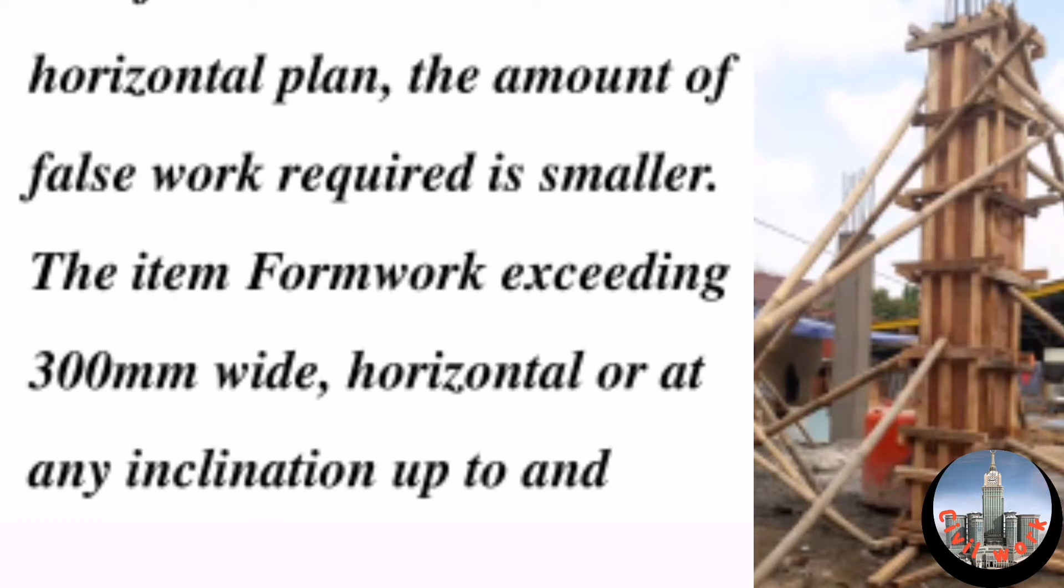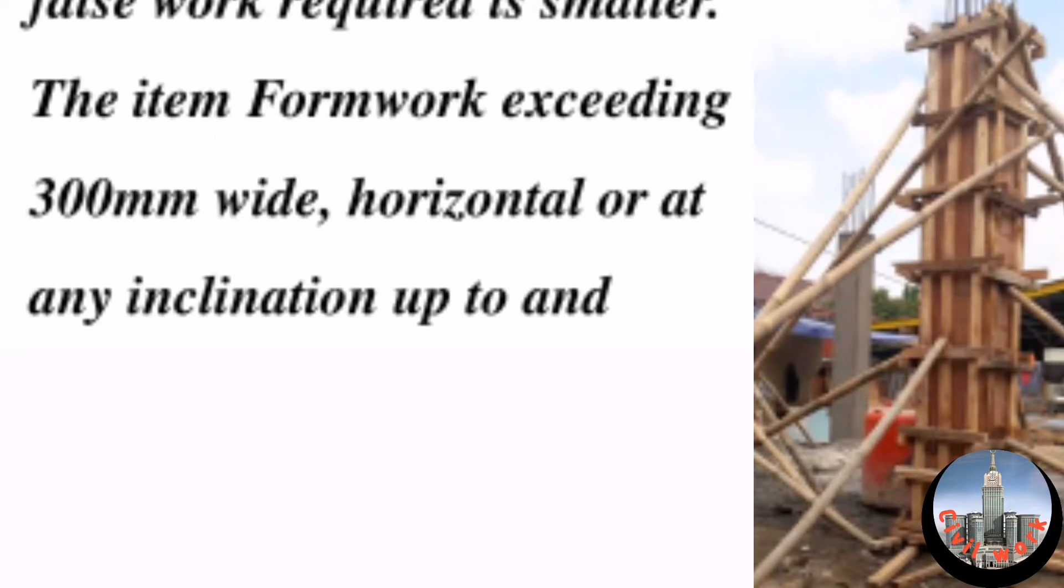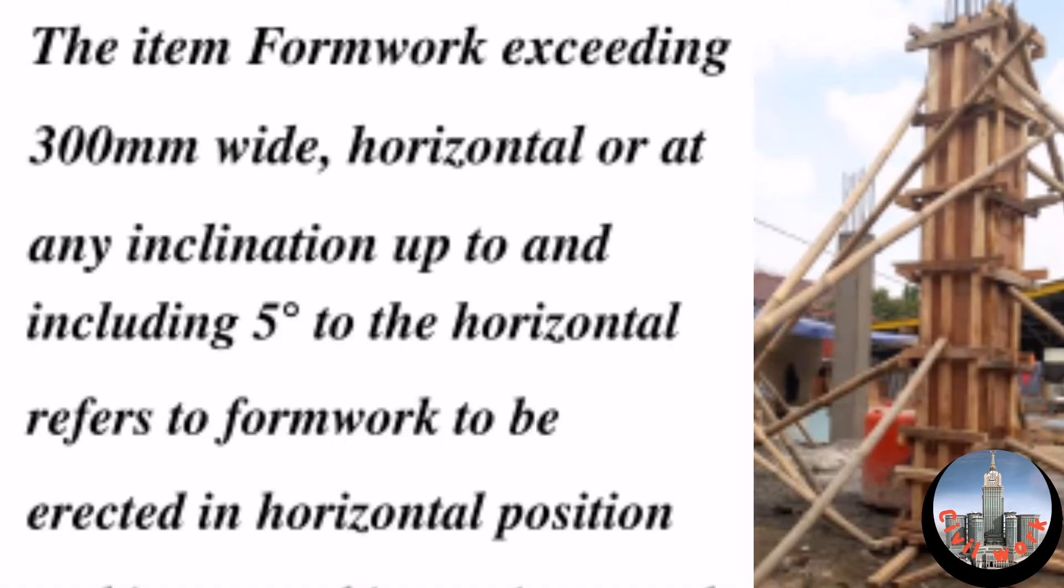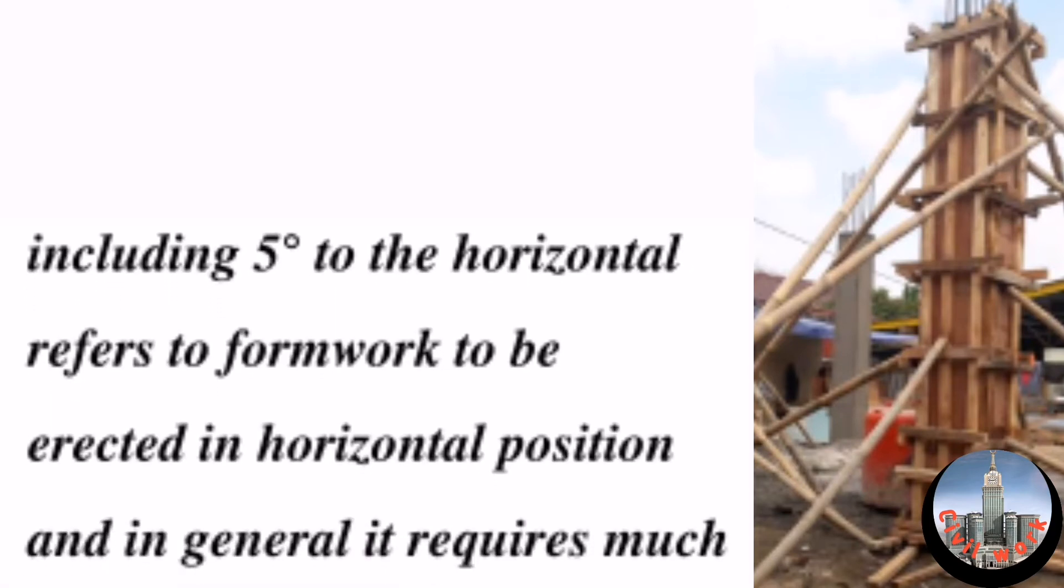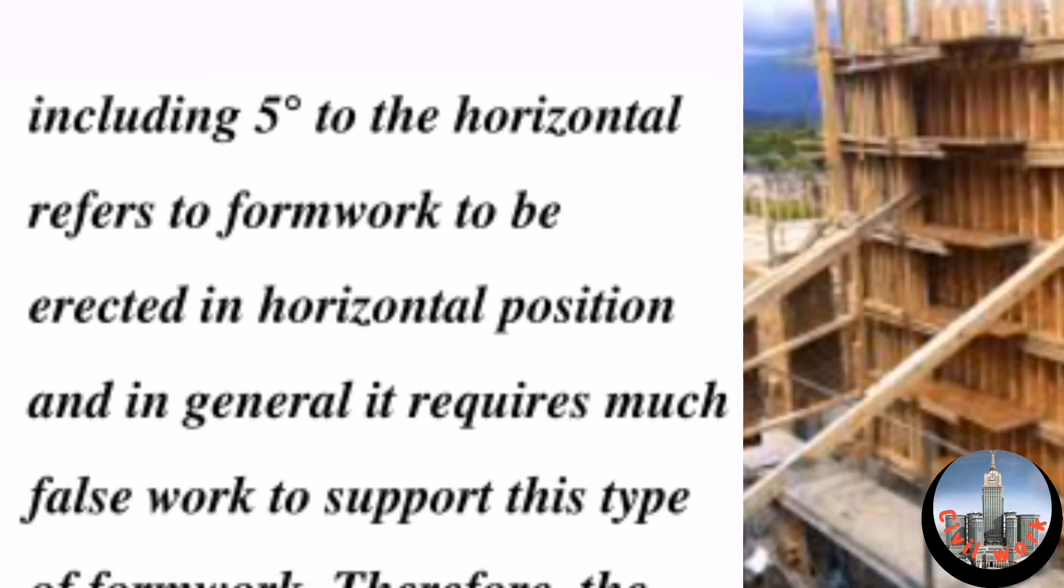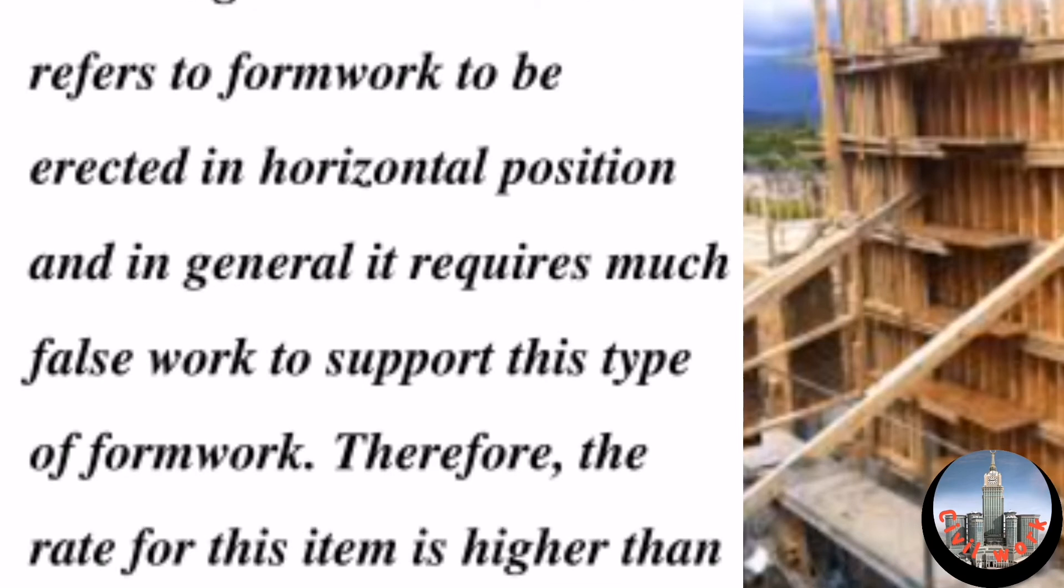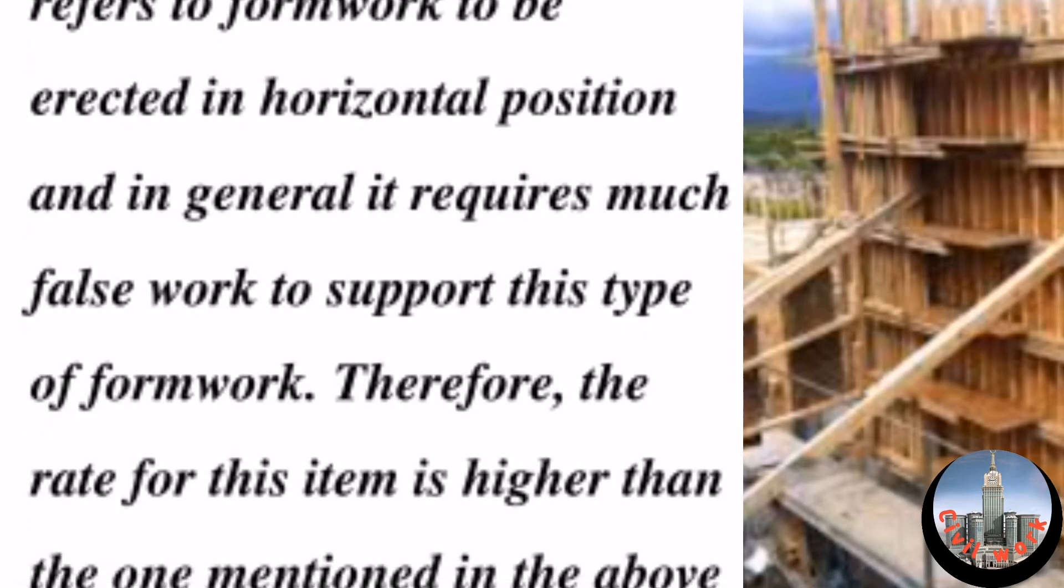The item formwork exceeding 300mm wide, horizontal or at any inclination up to and including 5 degrees to the horizontal, refers to formwork to be erected in horizontal position. In general, it requires much falsework to support this type of formwork.